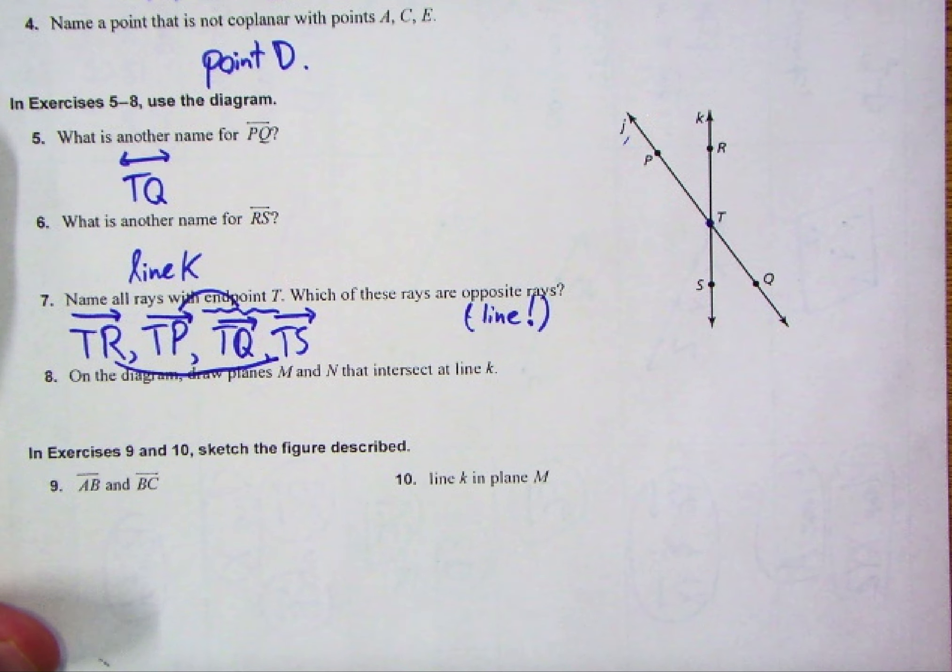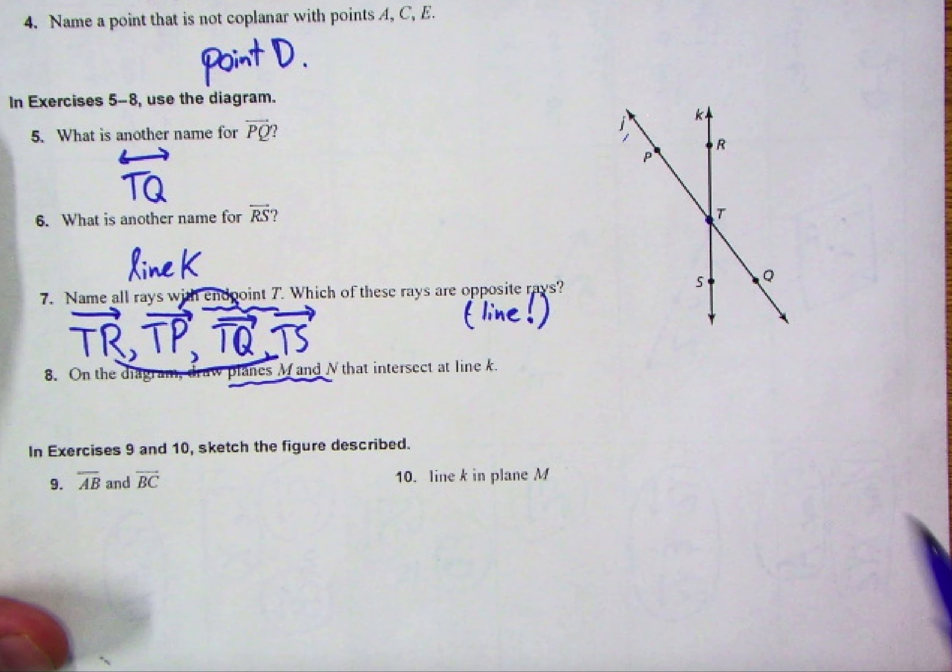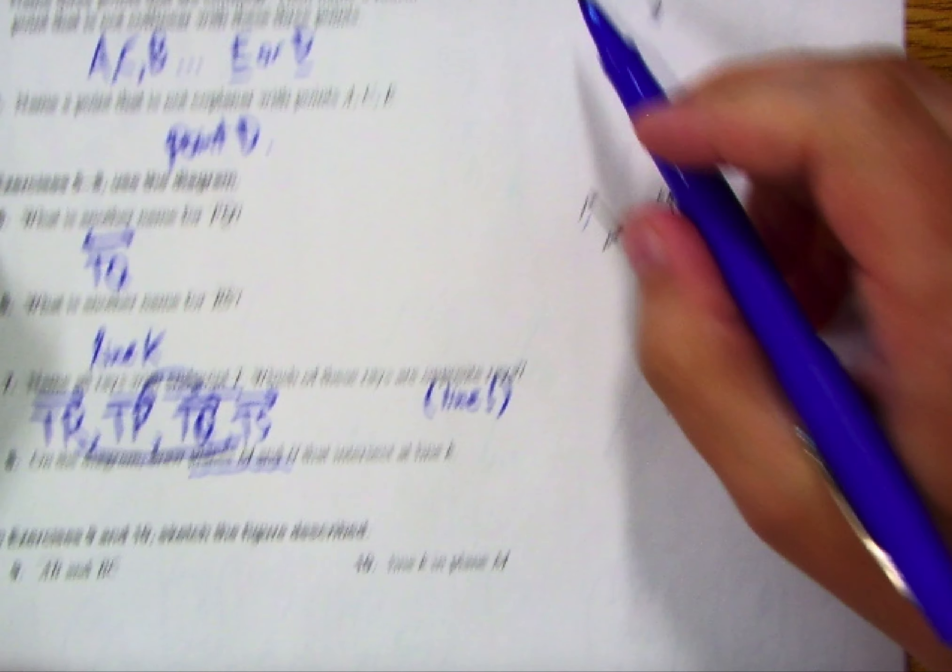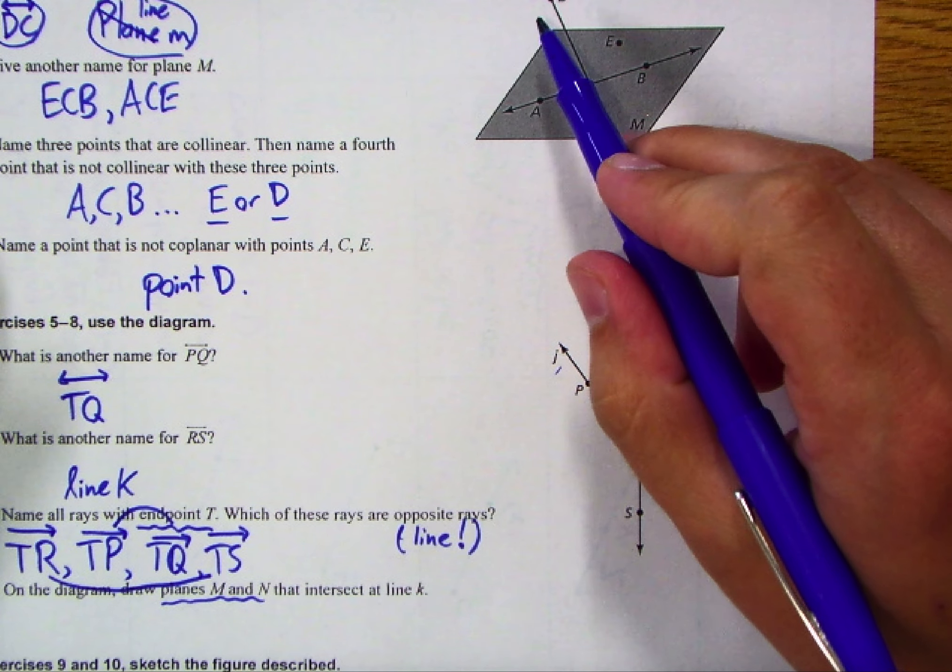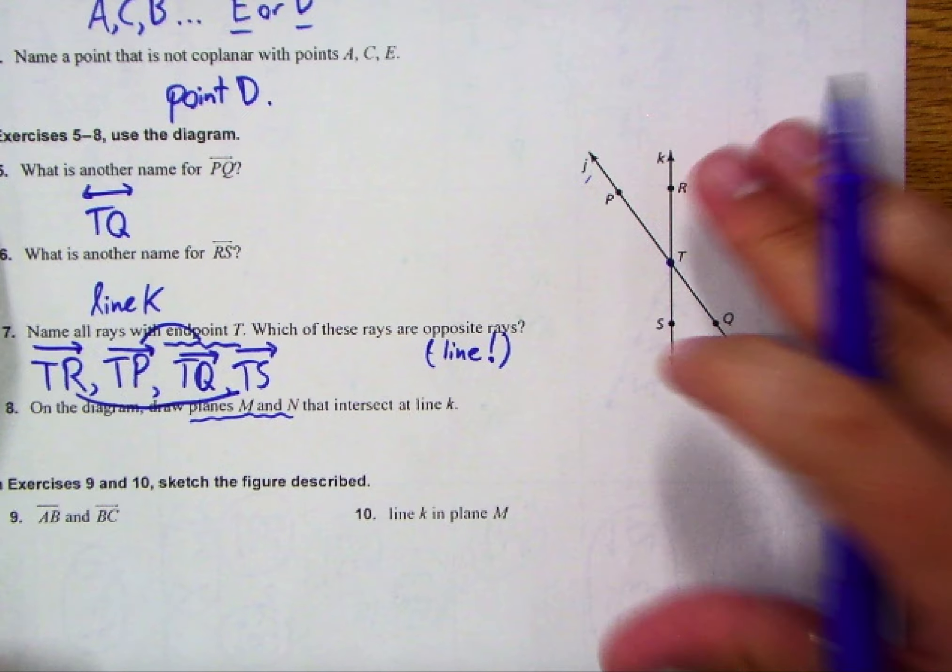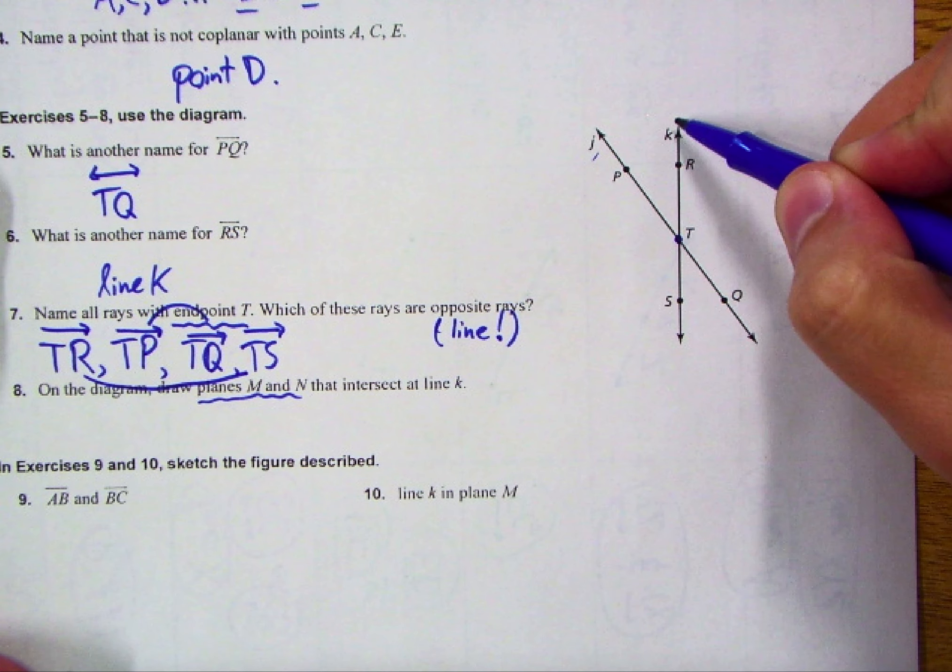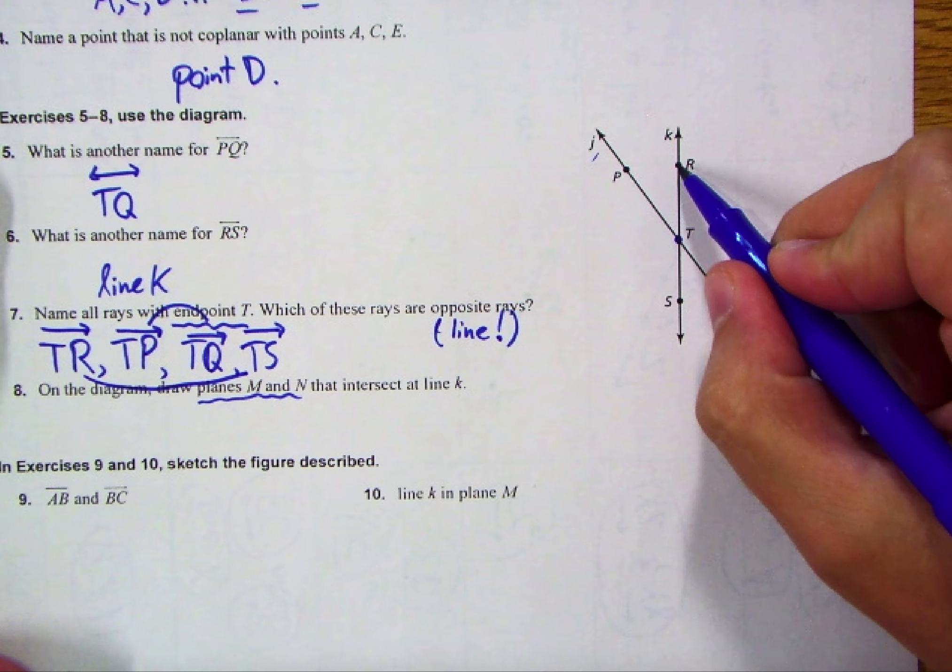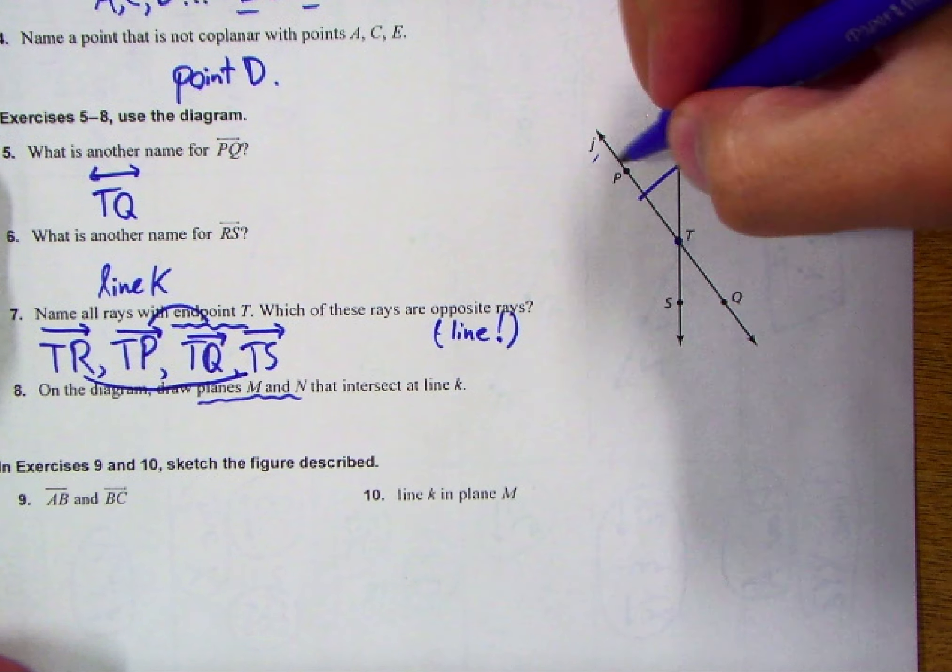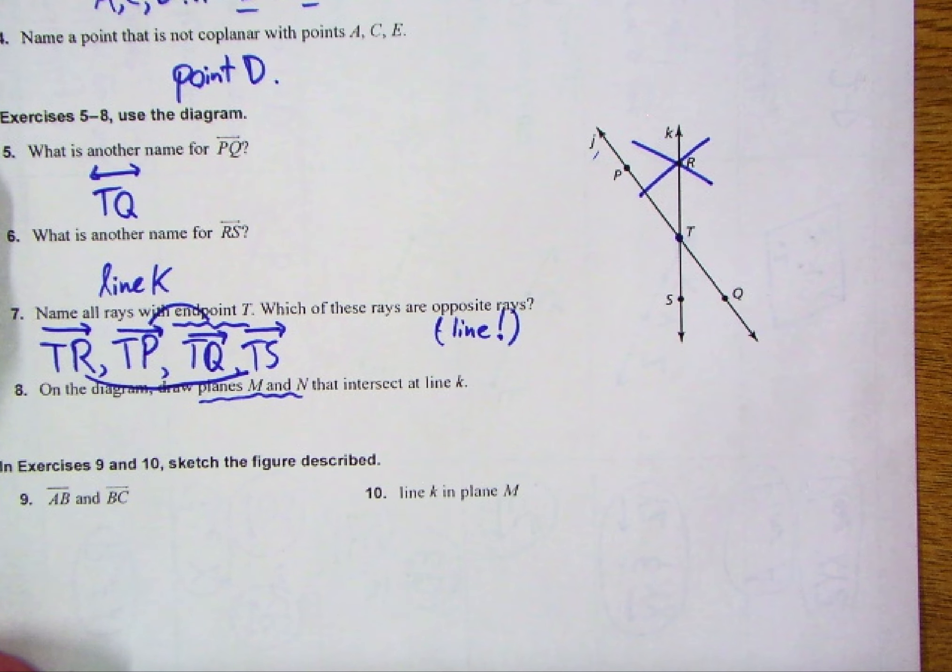All right, number eight. On the diagram, we're going to draw planes M and N that intersect at line K. Now this is kind of a tough one, because you guys don't have too much experience drawing the planes. Keep in mind, to draw a plane, we'll just use the parallelogram shape. And even though it goes on forever, hopefully it's helping you guys sort of envision that flat surface. Well, so if I want them to intersect at line K, that means that both of them need to meet at line K. So for instance, I could have the tops meet at R. Kind of an easy way to do this would be to draw an X. I could have the bottoms meet at S.